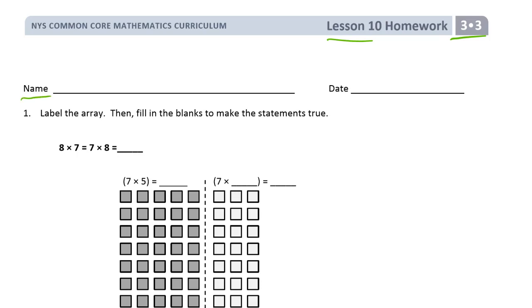We're labeling an array, and then filling in the blanks to make the statements true. So we're working with labeled arrays like this, and some are shaded and some aren't. We're using the distributive property and filling in the blanks.